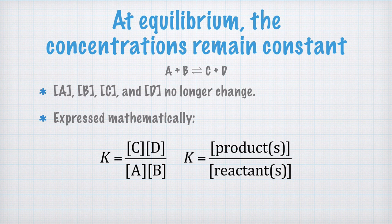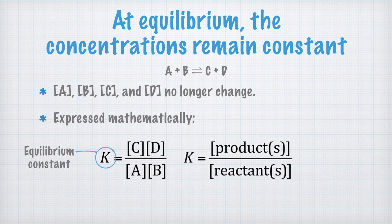This here, K, is called the equilibrium constant, and we define it like this. We take the concentration of the products and divide by the concentration of the reactants. This relationship is called the law of mass action, or sometimes Guldberg and Waage's law.